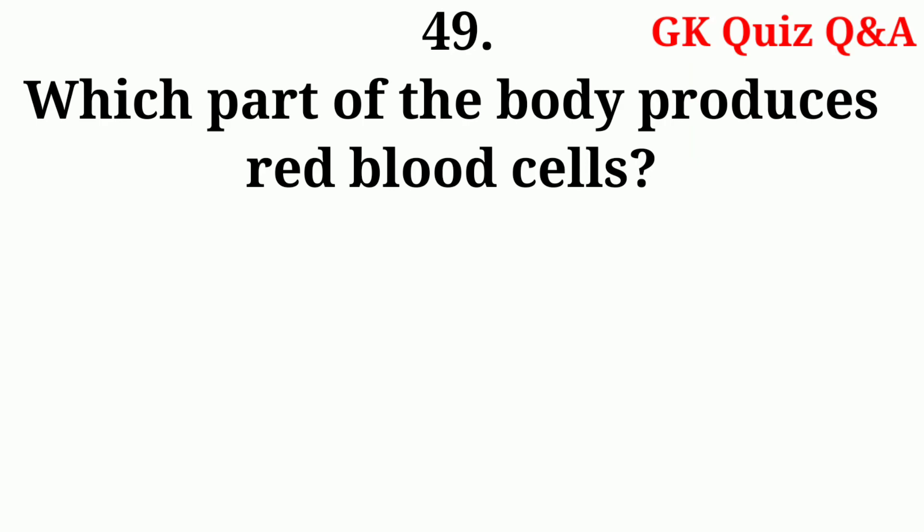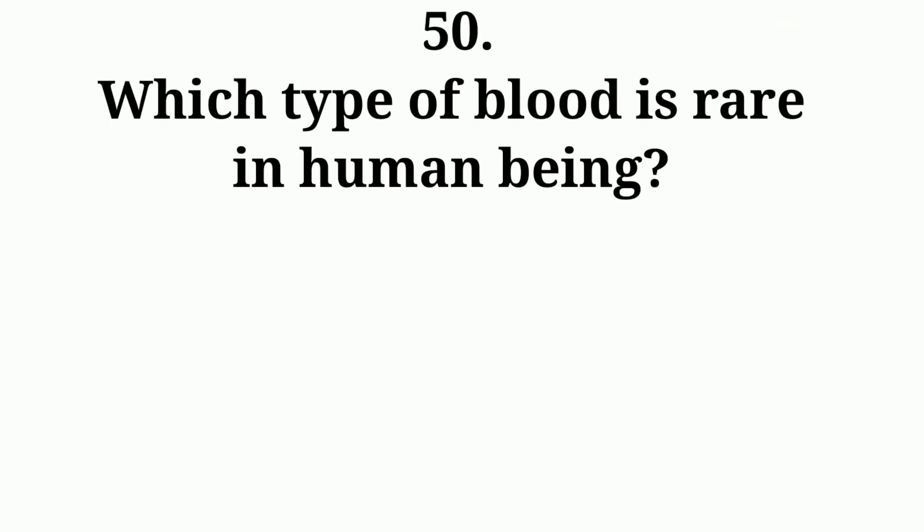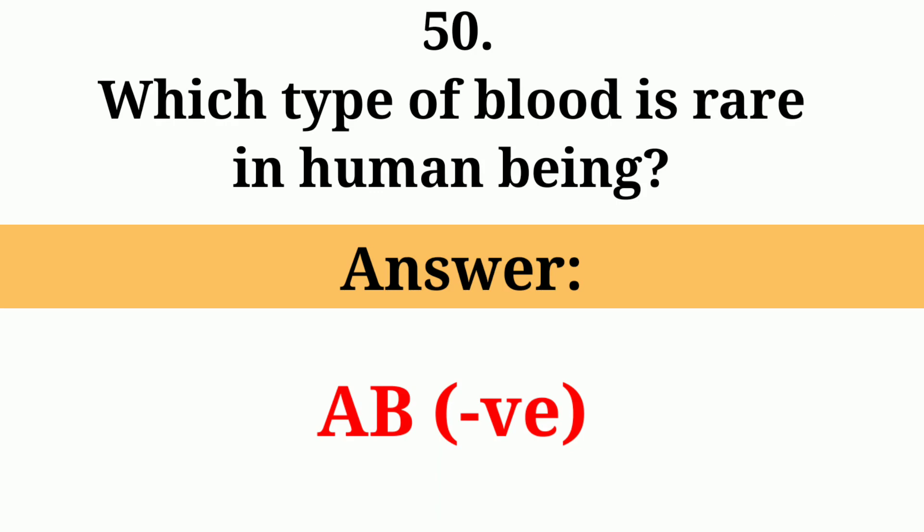Which part of the body produces red blood cell? Answer: Bone marrow. Which type of blood is rare in human beings? Answer: AB negative.